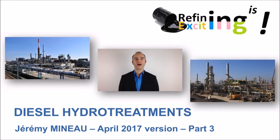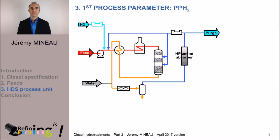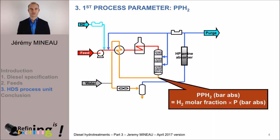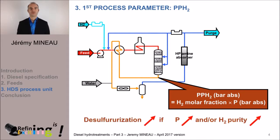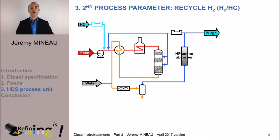The first operating parameter is the hydrogen partial pressure. This parameter is directly set by the pressure within the unit and by the molar fraction of hydrogen in the gaseous phase. The location where we consider this hydrogen partial pressure is at the outlet of the reactor, because it is at this place that the most refractory molecules are going to be desulphurized.